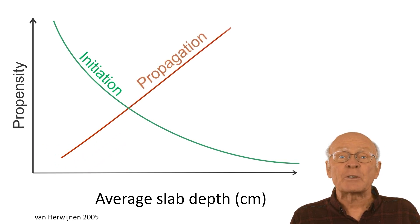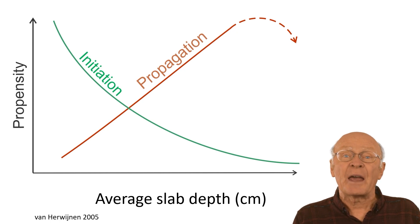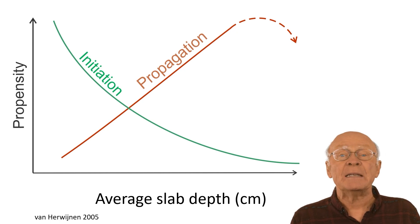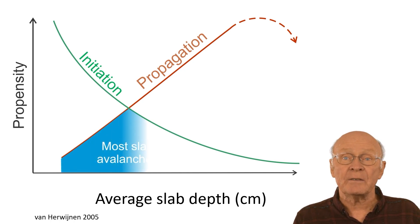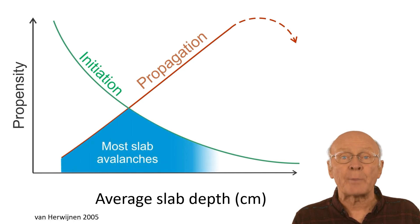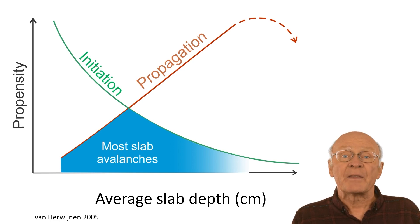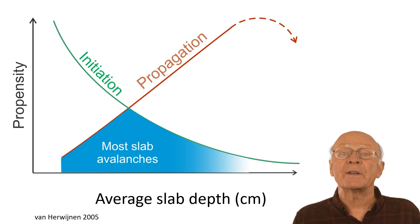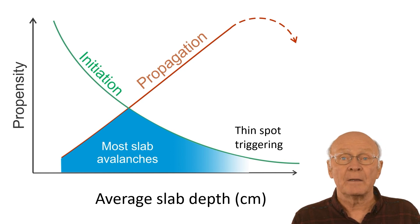Eventually, the surface hoar layer becomes resistant to crack propagation. Sometimes this does not happen until melting then refreezing has penetrated to the surface hoar layer. Most slab avalanches happen when conditions favor both crack initiation and crack propagation. When the slab is deep in most places, the slab is typically triggered from where it is thin. These avalanches are large, unexpected, and more often result in serious injury.